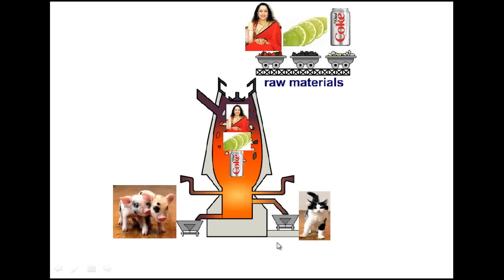Now, how to remember this process. The first raw material is hematite — you can remember the Bollywood actress Hema Malini jumping into the furnace: Hema Malini = hematite. Then you are throwing lime into the furnace to remember limestone. Finally, you are throwing a coke bottle in to remind you of coke. The molten iron collected at the bottom is called pig iron — imagine pigs collecting the iron. Above the molten iron, calcium silicate is collected by a silly cat, so calcium silicate = silly cat.